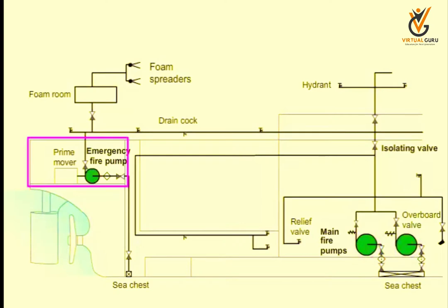The emergency fire pump is located in a remote location away from the engine room. The power supply can be from the emergency switchboard or by an independent diesel engine. This ensures operation of the pump even if there is a fire in the engine room resulting in a blackout.